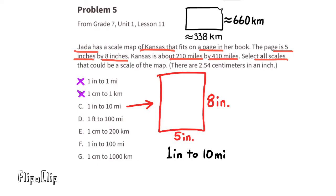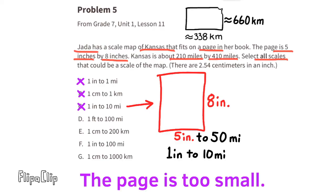Scale c: one inch to 10 miles. Since the page is five inches wide, it could accommodate 50 miles, and eight inches tall could accommodate 80 miles. Again, way too small — the map would need to be 50 inches wide and 80 inches tall.